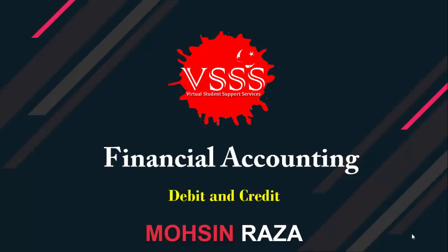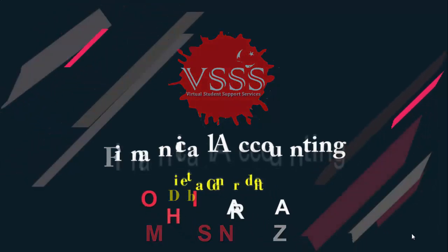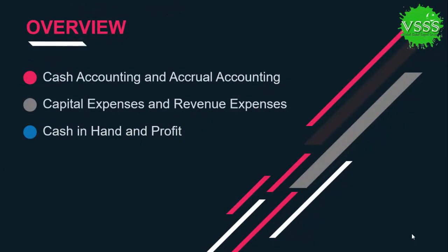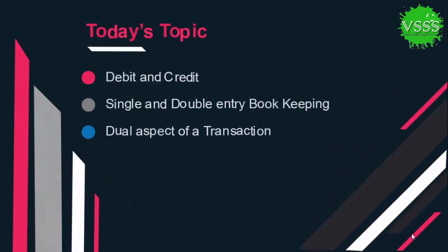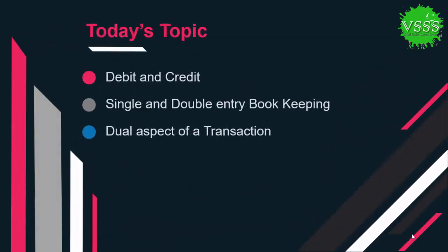Hello and welcome to our fifth financial accounting class. Last time we defined the difference between cash accounting and accrual accounting, the difference between capital expenditure and revenue expenditure, and we also defined the difference between cash in hand and profit. In today's class I am going to discuss the most important concept of financial accounting: debit and credit.